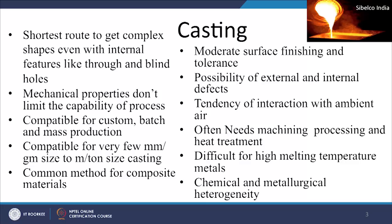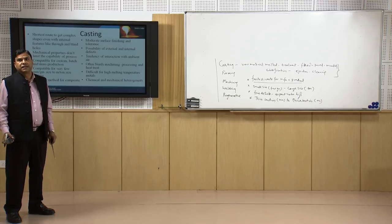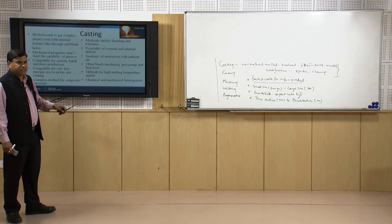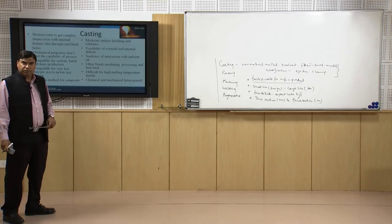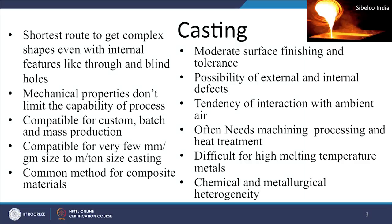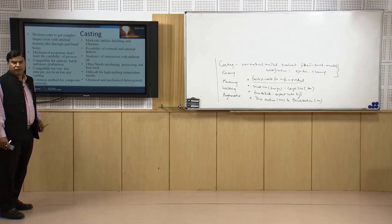Mechanical properties do not limit the capability of this process. It is also compatible for custom, batch, and mass productions. We can make a very large casting in a single pour, or we can make a batch of 10 or 50 products economically. At the same time the process can also be used for mass production. The process is compatible for customized products, batches of different sizes, and mass production — and it is commonly used in the casting industry for making wheels, piston rods, engine blocks, and similar parts.